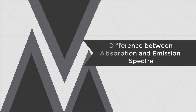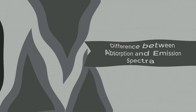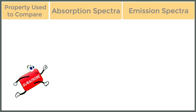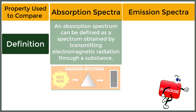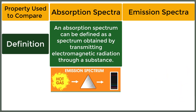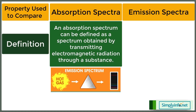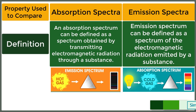Difference between Absorption and Emission Spectra. An absorption spectrum can be defined as a spectrum obtained by transmitting electromagnetic radiation through a substance. Whereas, an emission spectrum can be defined as a spectrum of the electromagnetic radiation emitted by a substance.